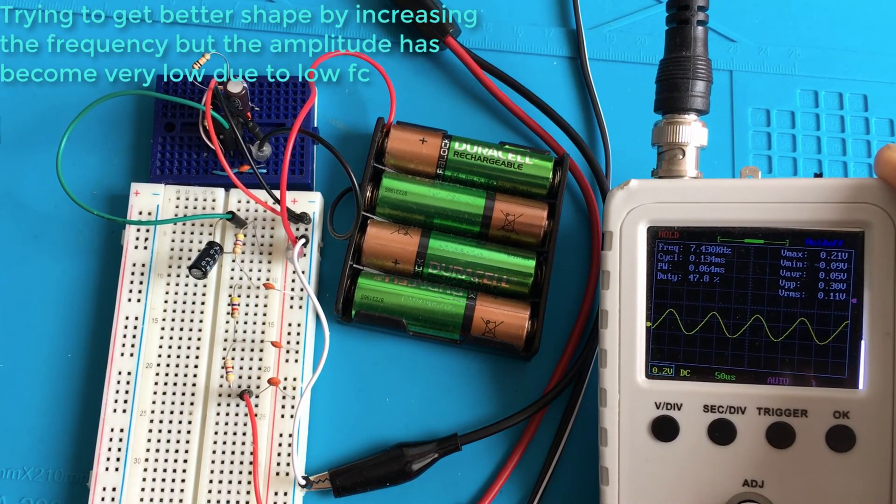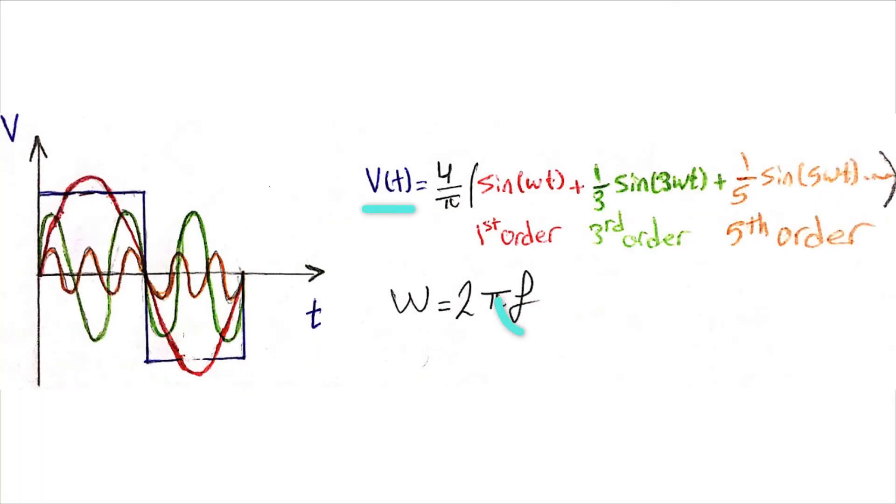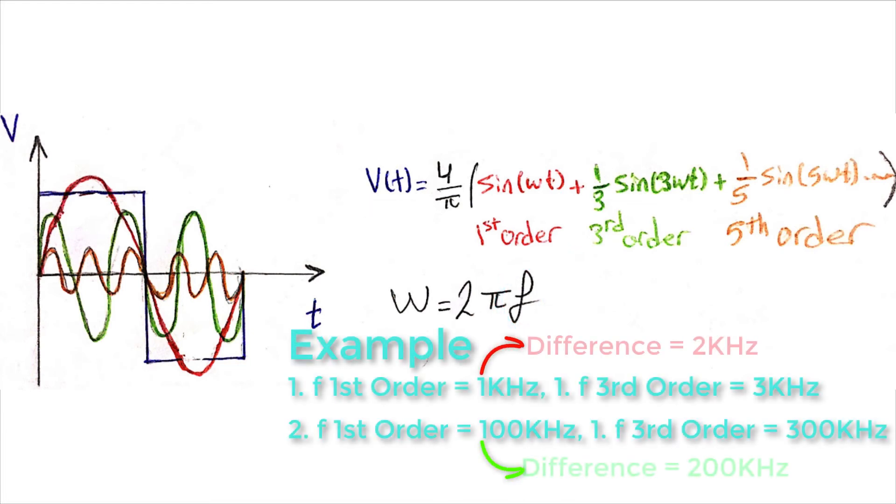One final note related to harmonics I want to mention is that using input signal with a higher frequency makes it easier to filter, because in high-frequency square wave signals, the frequency range between harmonic orders becomes larger.